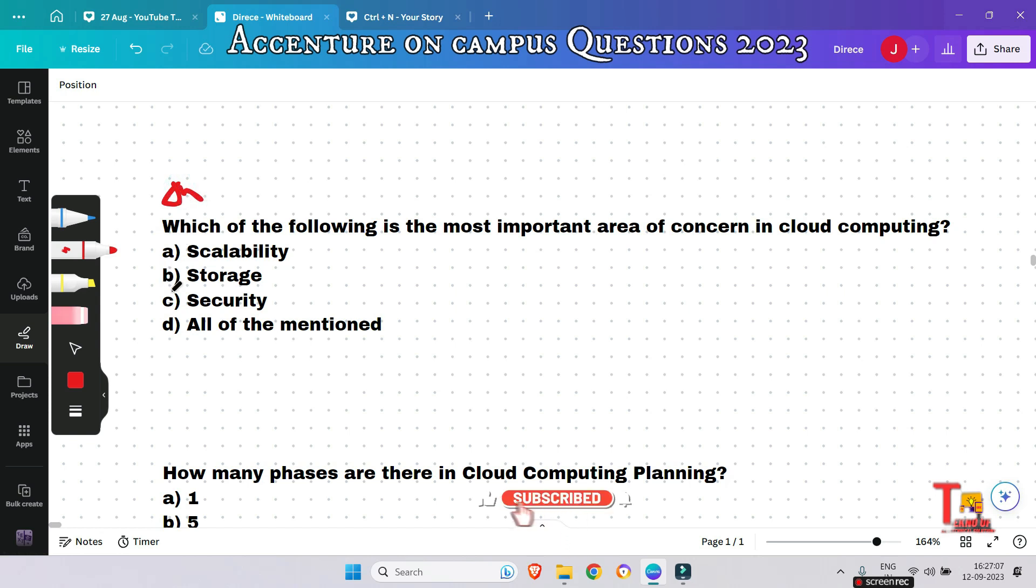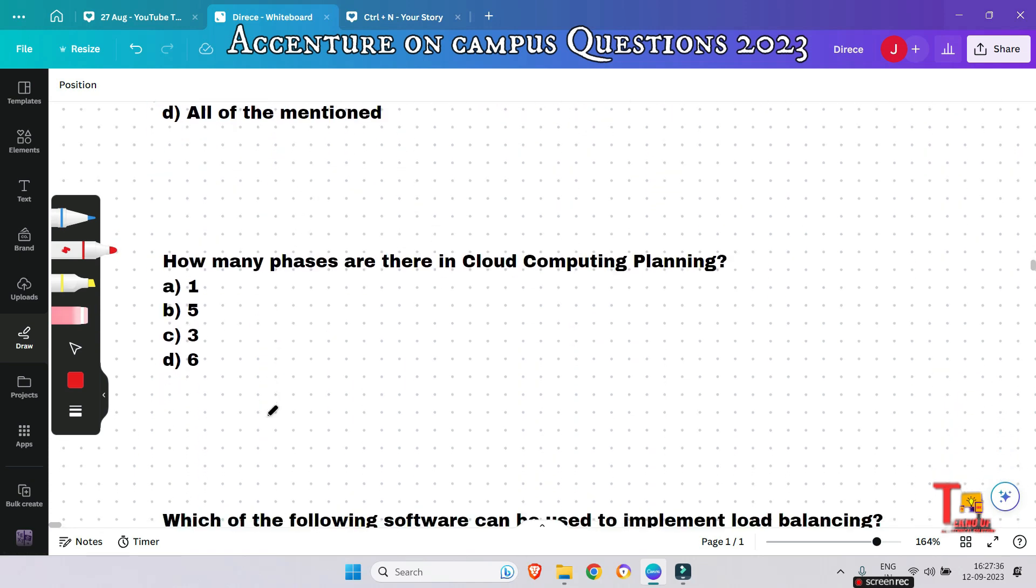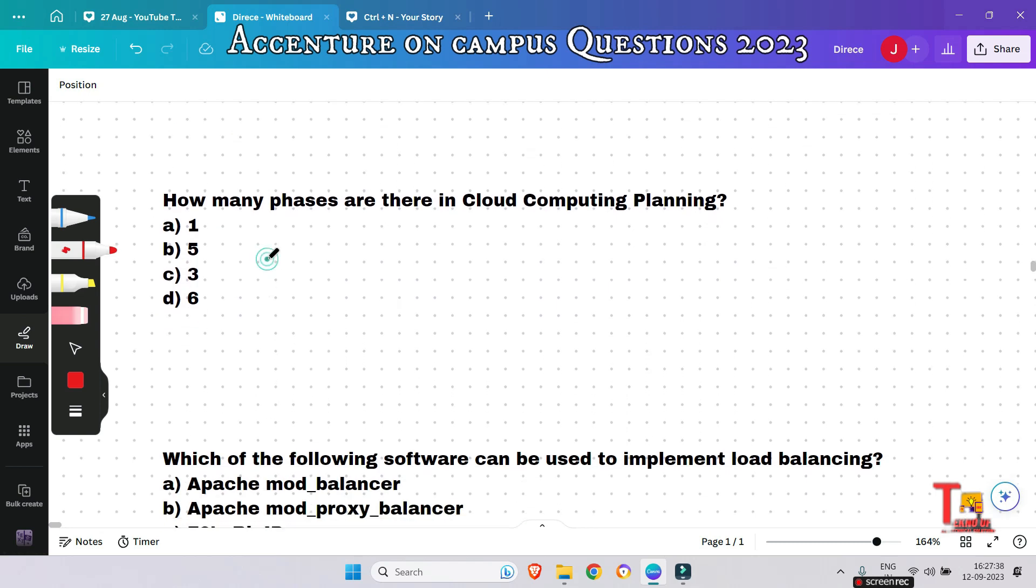So please pause and give the answer. The answer in this case will be option C - Security. When your data goes and is stored on systems that are no longer under your control, you run the risk of it being intercepted or misused by outsiders. So we have to save the data. The answer is Security - this will be the most important area of concern.